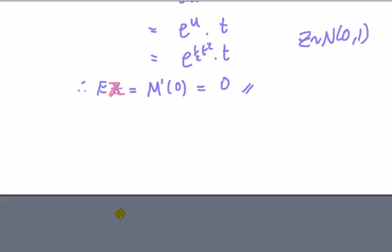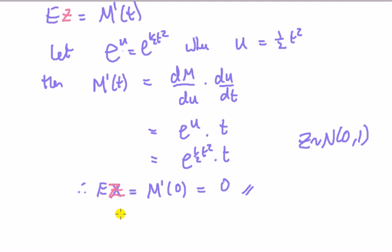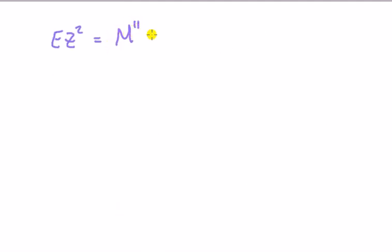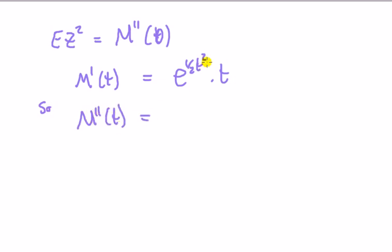Next thing: variance. For that I need the second moment as well. The second moment of z² is going to be the second derivative of the moment generating function evaluated at 0, but we've already found the first derivative. So I have to differentiate again.